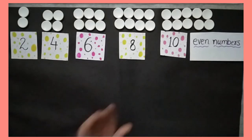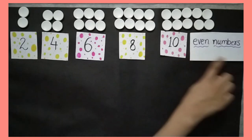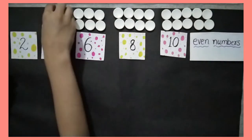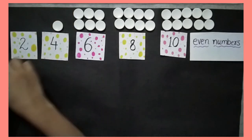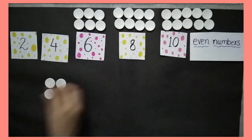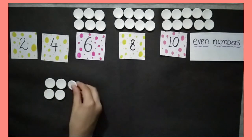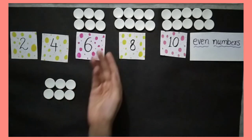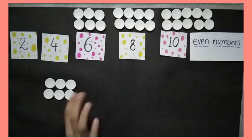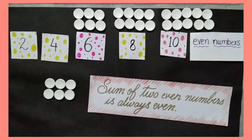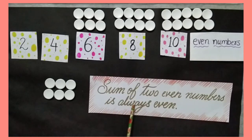Now I will take any 2 even numbers. I will take 2 tokens and 4 tokens and count them together: 1, 2, 3, 4, 5, 6. Six tokens make 3 pairs and no token is left behind. That means 6 is an even number. This means that the sum of 2 even numbers is always even.